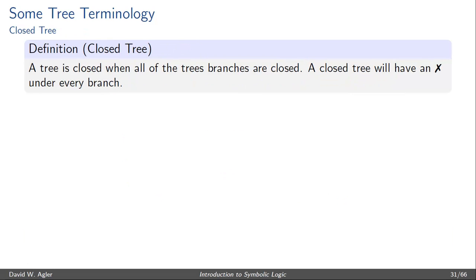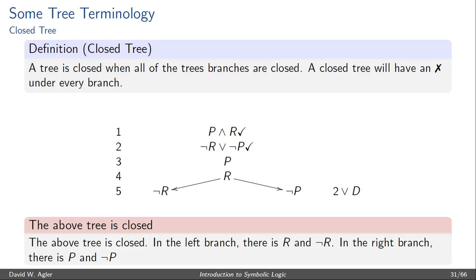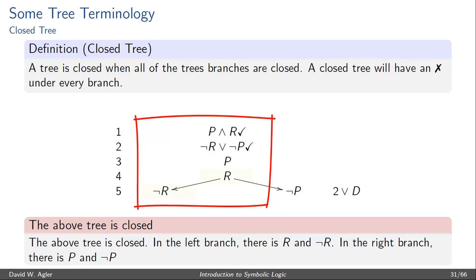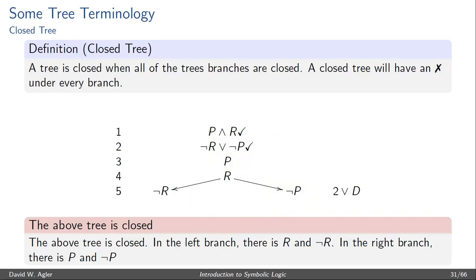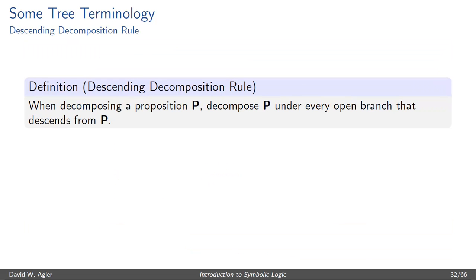A closed tree is a tree where all of the tree's branches are closed. Under every branch of a closed tree, there'll be an X under it. In this example, notice that all of the branches are closed. Starting from the leftmost side, we have a proposition NOT R and its literal negation R, and on the rightmost side, we have a proposition P and its literal negation NOT P. So here we have a tree where all of the branches are closed, and so this tree is considered a closed tree.